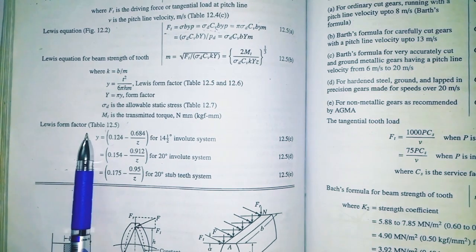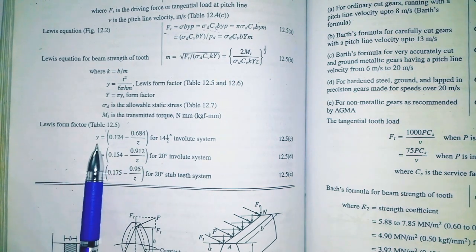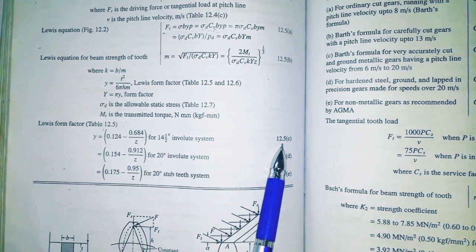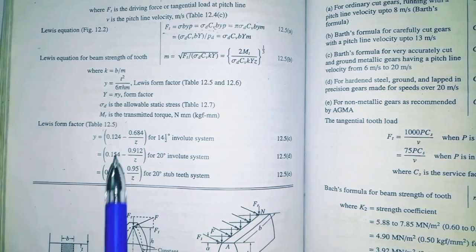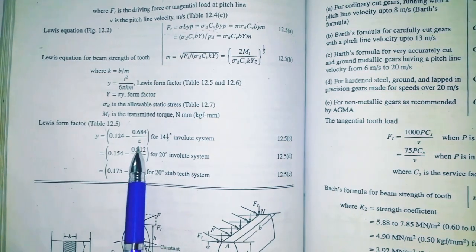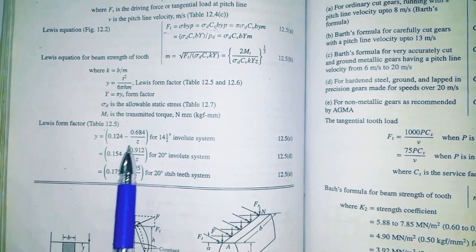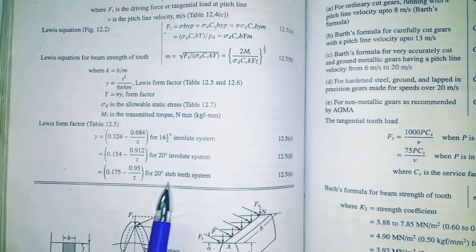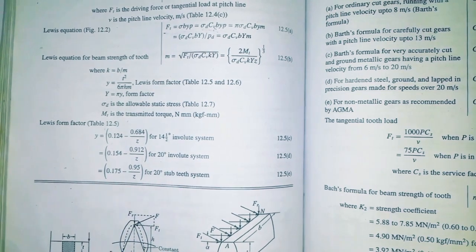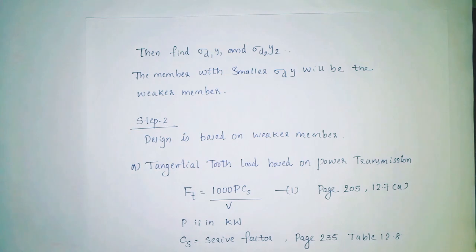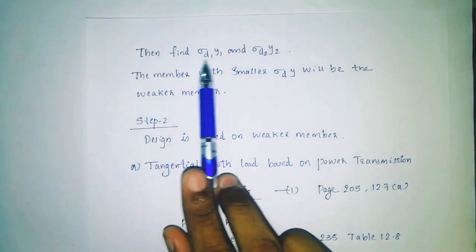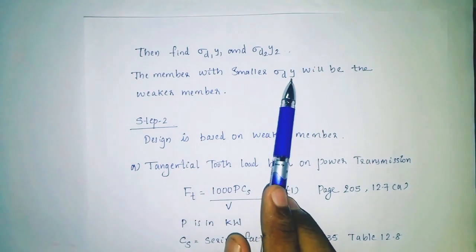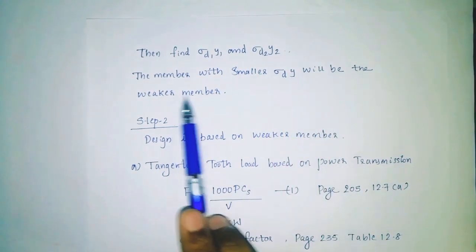This is the Lewis form factor table for Y. Y values are given for 14.5 degree involute system and 20 degree involute system — use equation 12.5C. In the equation, substitute Z with ZD1 and ZD2 respectively. Then find sigma D1·Y1 and sigma D2·Y2. The member with the smaller sigma·dy value will be the weaker member.